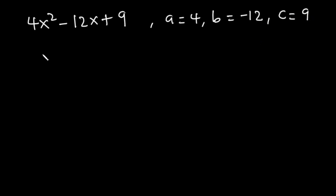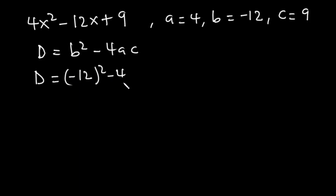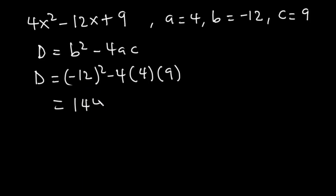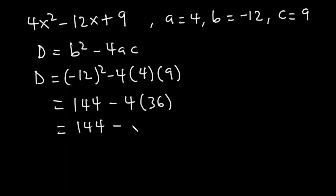The discriminant is given by b squared minus 4ac. So D equals negative 12 squared minus 4, times a which is 4, times c which is 9. Negative 12 squared is 144, 4 times 9 is 36, and 4 times 36 is 144. So the discriminant is equal to 0.